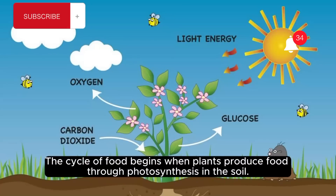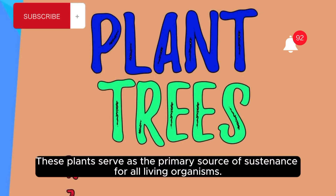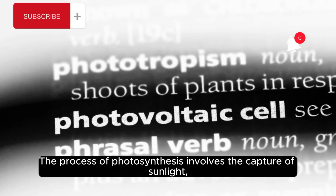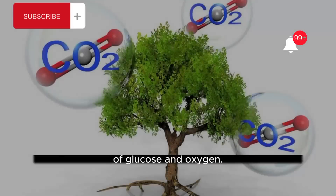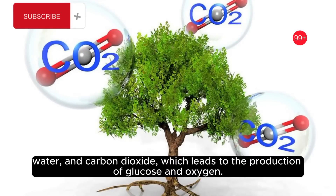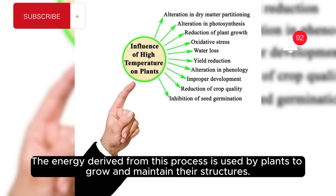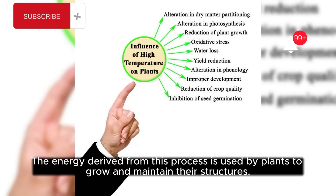The cycle of food begins when plants produce food through photosynthesis in the soil. These plants serve as the primary source of sustenance for all living organisms. The process of photosynthesis involves the capture of sunlight, water, and carbon dioxide, which leads to the production of glucose and oxygen. The energy derived from this process is used by plants to grow and maintain their structures.